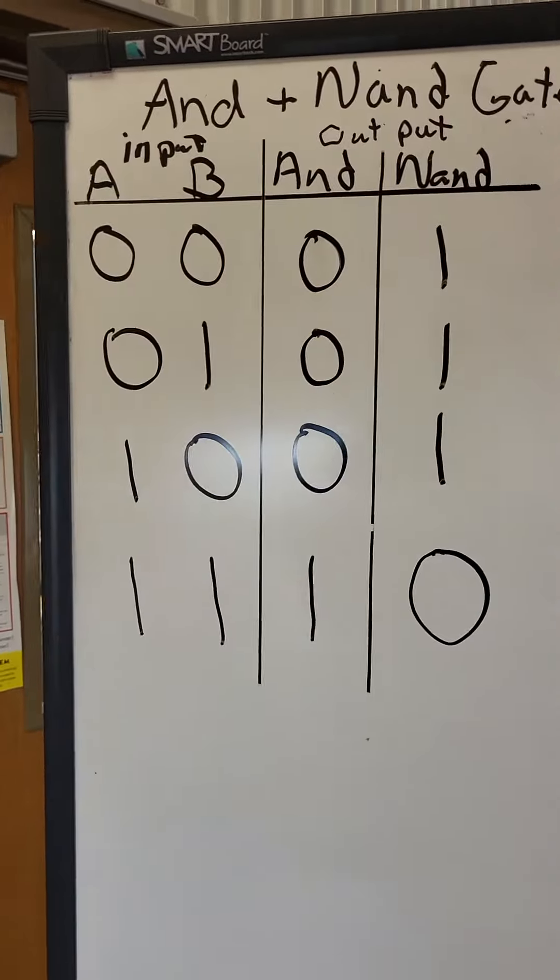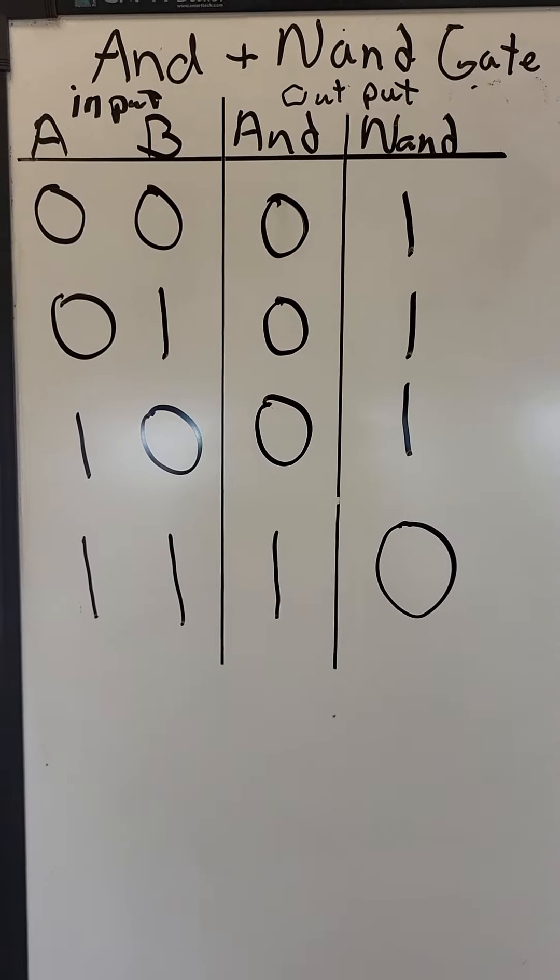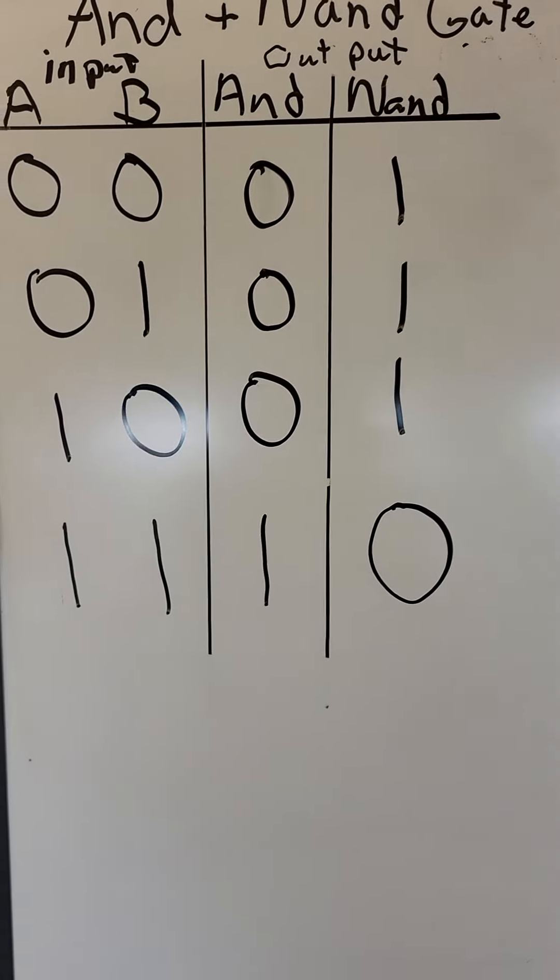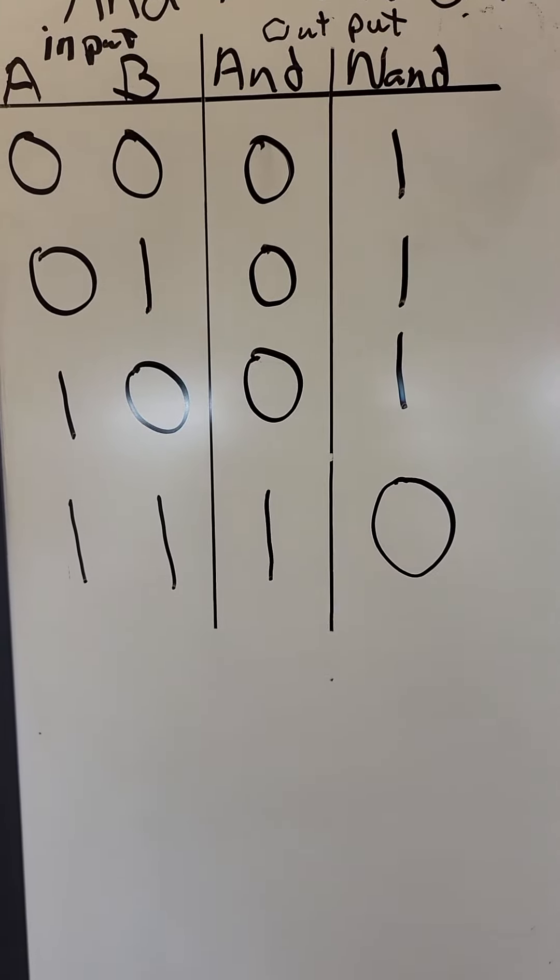Here's a truth table where zero zero makes zero on AND, but one on NAND. Zero one is zero on AND, but one on NAND.